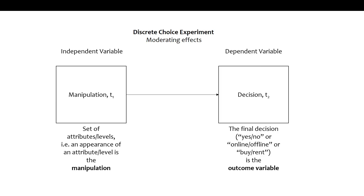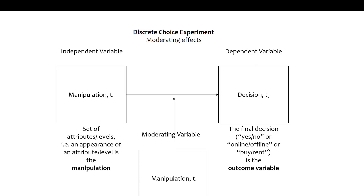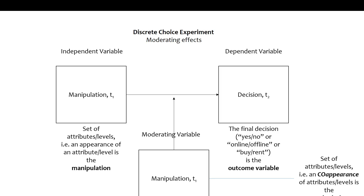The scheme is the same: independent variable on the left — your manipulation, the set of attributes — and your decision on the right as the dependent variable. What is new is the moderating variable. It can happen that not only the appearance of individual attributes matters, but also the co-appearance of several attributes. In one of my presentations I showed an example with a car: color (yellow or black) and power of engine (25 kWh or 35 kWh).